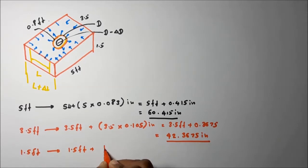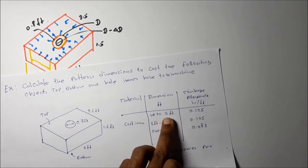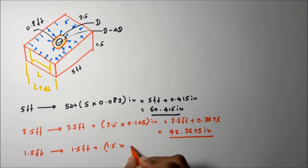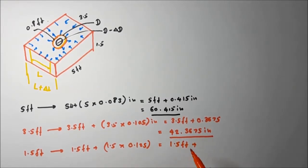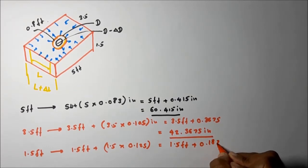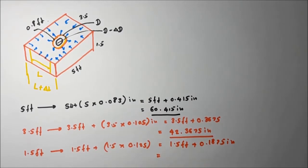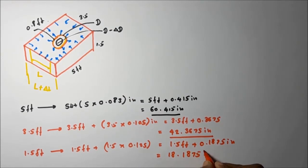For the 1.5-foot dimension: it falls in the 'up to 2 feet' range, so the shrinkage allowance is 0.125 inches per foot. Pattern dimension equals 1.5 feet plus 1.5 times 0.125. That gives 1.5 feet plus 0.1875 inches. Converting 1.5 feet to 18 inches, the shrinkage-adjusted dimension is 18.1875 inches.